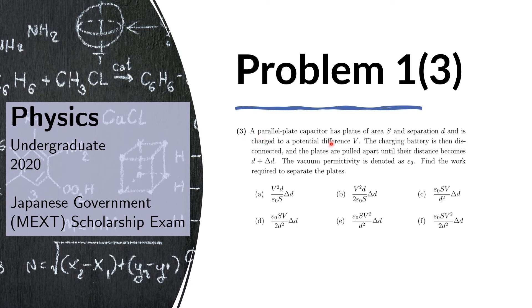The third problem for part one for the physics exam reads: A parallel plate capacitor has plates of area S and separation D and is charged to a potential difference V. The charging battery is then disconnected and the plates are pulled apart until their distance becomes D plus delta D. The vacuum permittivity is denoted as epsilon naught. Find the work required to separate the plates.